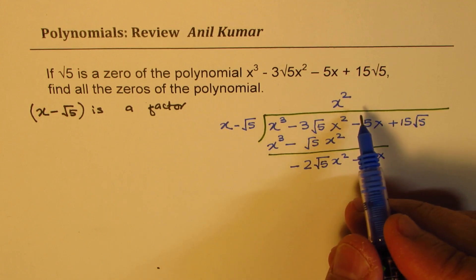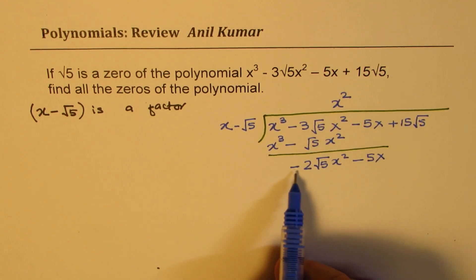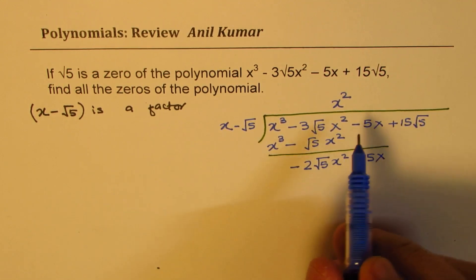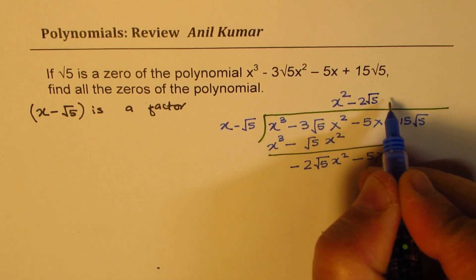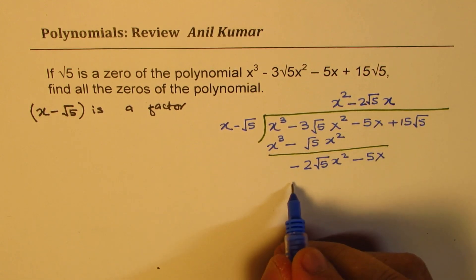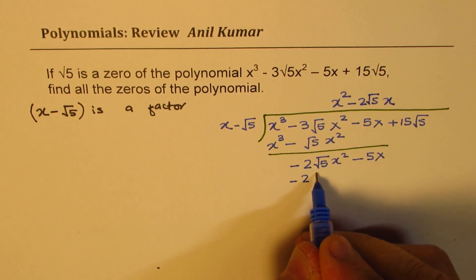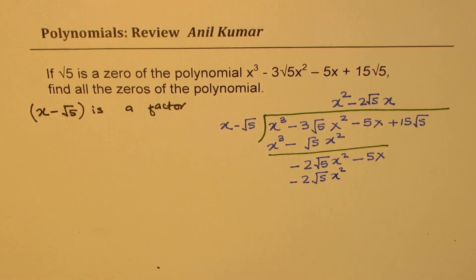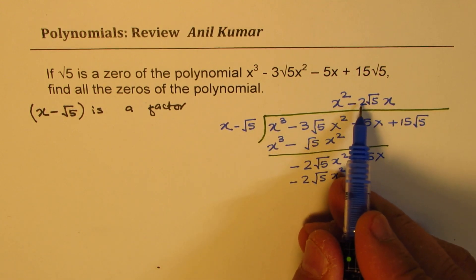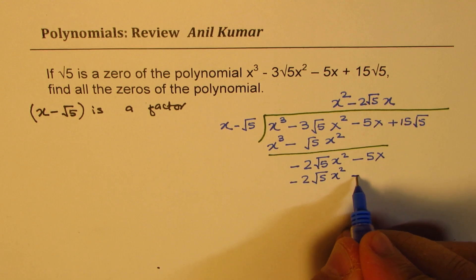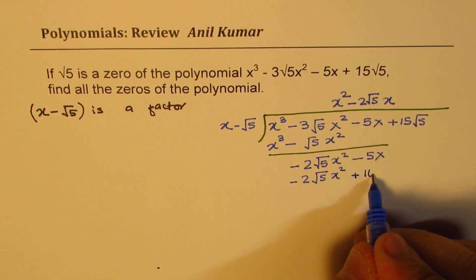So the next term in the quotient should be minus 2 square root 5 x. That gives us minus 2 square root 5 x squared. And here, square root 5 and square root 5 will become 5. And 5 times 2 is 10. Minus minus is positive. So you get positive 10x.